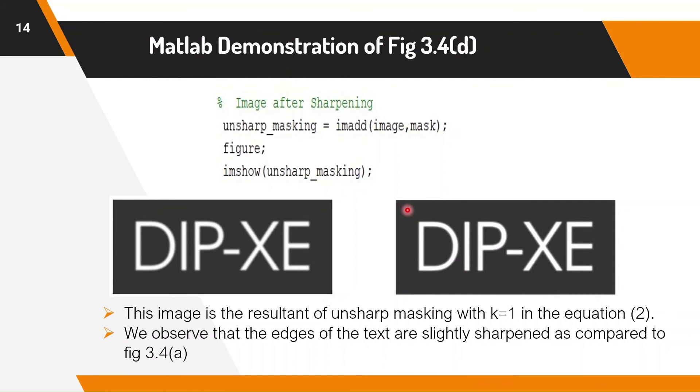Now we add our mask back to our original image using imadd command. This is the original image and this is the image after sharpening. As we can observe here, the edges of the unsharp masked image are more enhanced.